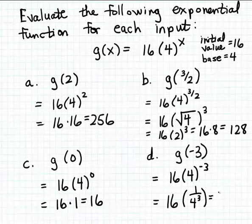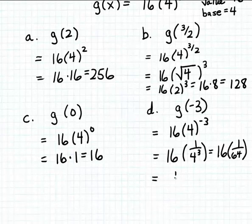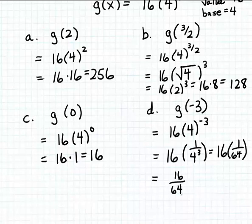4 cubed is 64, so this is 16 times 1 over 64. Let's scroll down a little bit here, so this is 16 over 64. 16 goes into 64 four times, so you can reduce this fraction to 1 fourth. So g of minus 3 is 1 fourth.